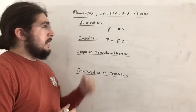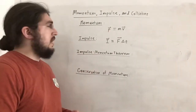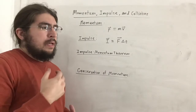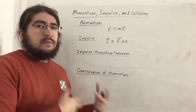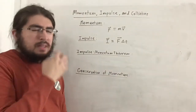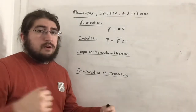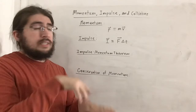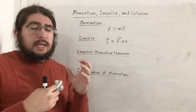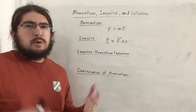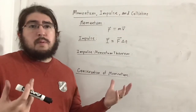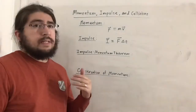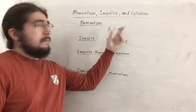Here we see momentum — we use lowercase p to denote it. Momentum is a vector quantity equal to mass times velocity. Impulse, also a vector quantity, is defined to be force times the change in time. Now, intuitively, what momentum means is that once something has started moving, it kind of keeps moving in its own way.